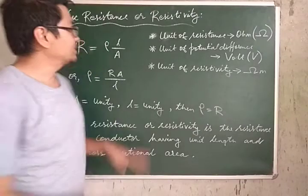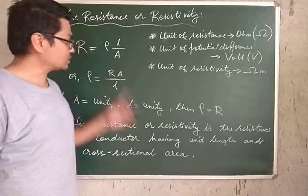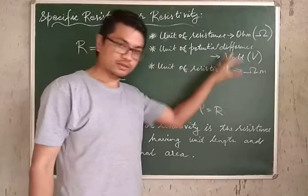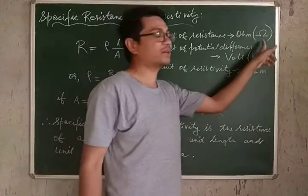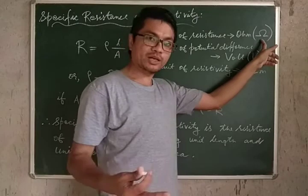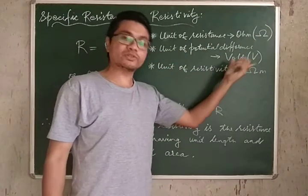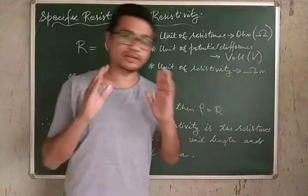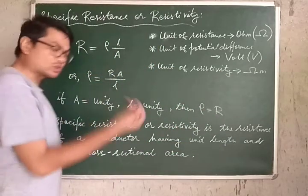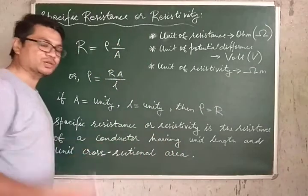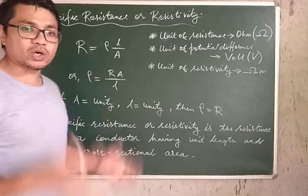Let's start with the topic of specific resistance or resistivity, which we discussed in the last video. The unit of resistance is ohm, named after a person, and denoted by the Greek letter omega. The unit of potential difference is volt, denoted by capital V. The unit of resistivity is ohm meter in SI, or ohm centimeter.